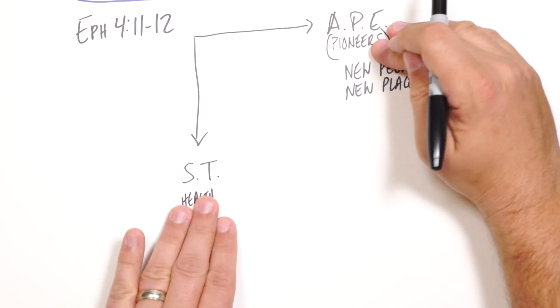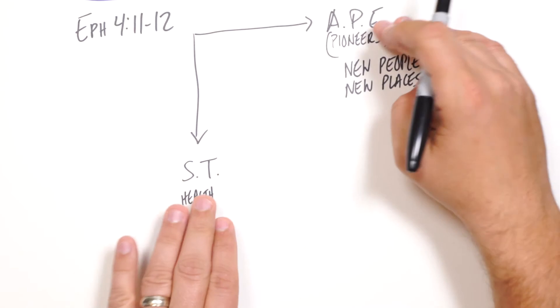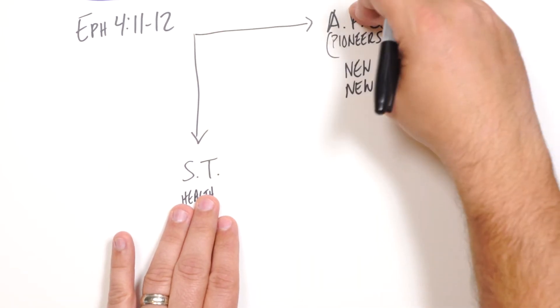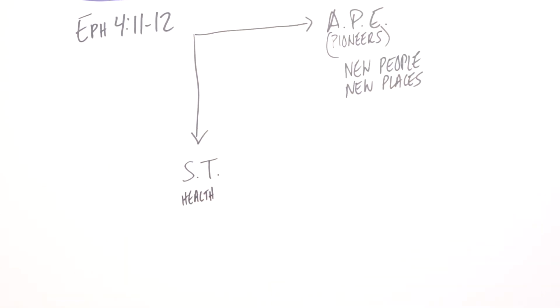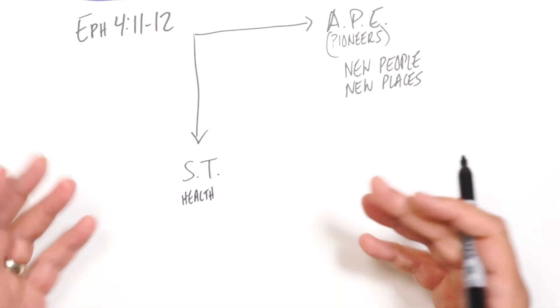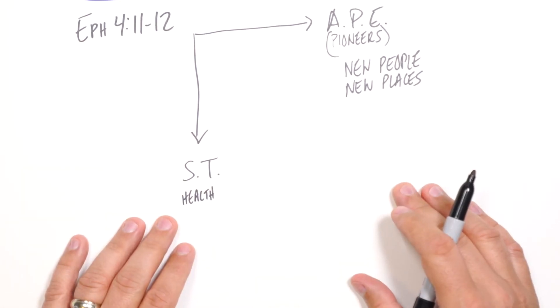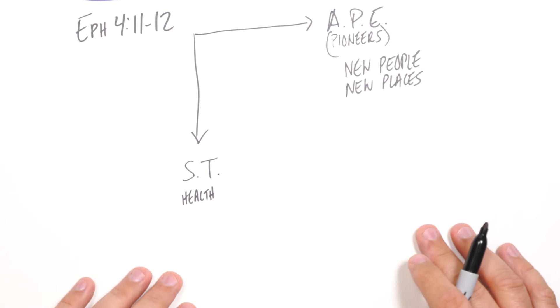And both are equally valuable. They're needed. These are more pioneering among lostness. And then once you've got disciples and churches, these are driving it down deep and healthy. And the ideal is when they're working together.